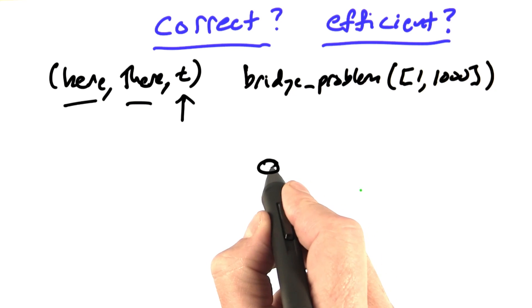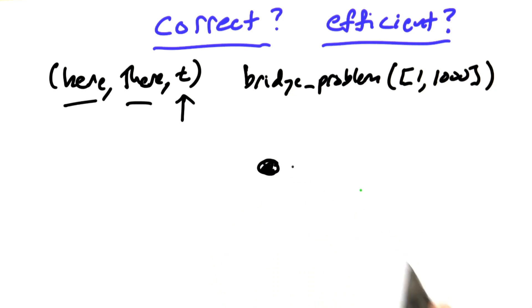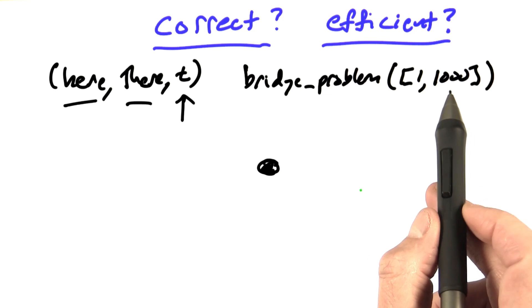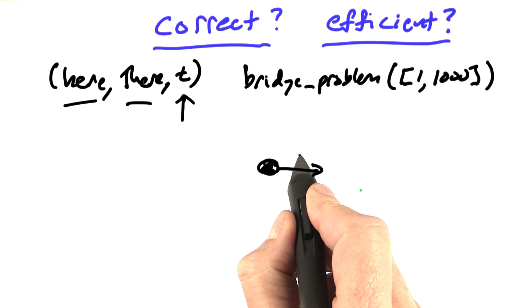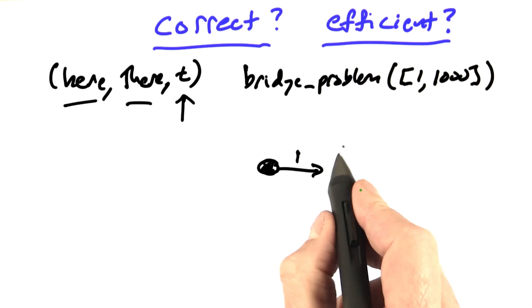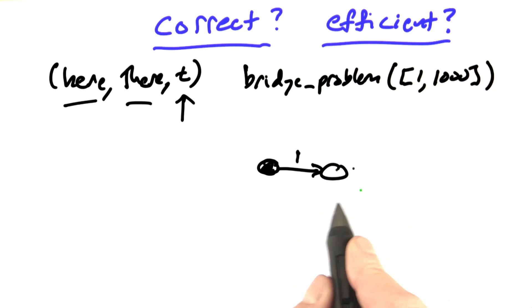We're going to start out in the initial state that took time 0, and then we're going to start adding things to the frontier. Out of all the ways we could cross, the one that adds the least is for the 1 to go across by himself. Now, he's on the other side with the 1 on the other side and the 1,000 on the original side. That only took one step.